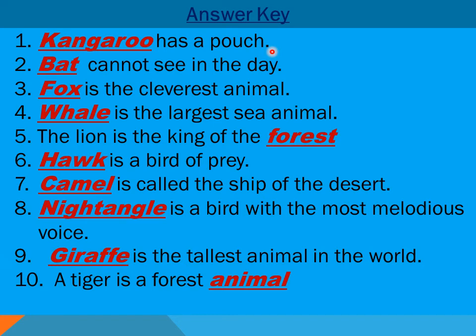Number five: the lion is the king of the forest — as you know, lions are supposed to be the king of the forest. Number six: hawk is a bird of prey. Number seven: the animal called the ship of the desert is the camel — these animals are mostly found in desert areas. Number eight: the bird with the most melodious voice is the nightingale.